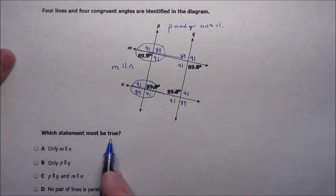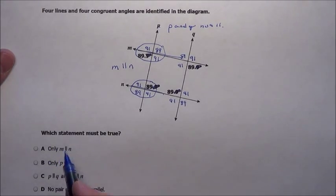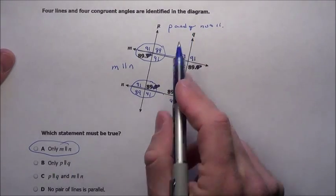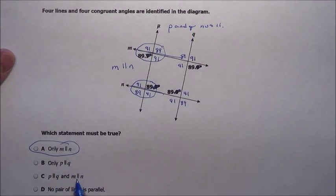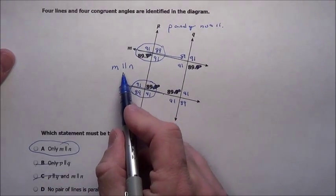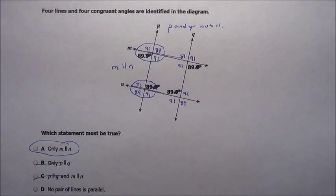Let's see what it says. Which statement must be true? Only M is parallel to N? Very first thing. Nice. Only P and Q are parallel? We already said they're not. P is parallel to Q and N? No. No pair of lines are parallel? No, we know that M and N are parallel. So choice A will be for problem number 11.